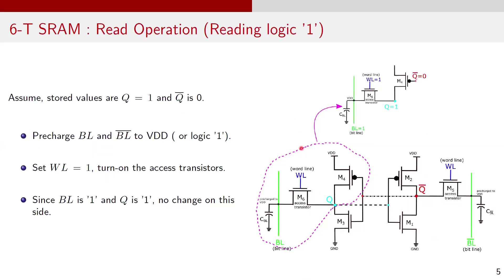To understand the read operation in SRAM cell, let's assume the stored values are Q equals to 1 and Q bar equals to 0. To begin reading, both bitlines BL and BL bar are pre-charged to VDD or logic 1. Then the wordline WL is activated by setting it to 1. When the wordlines are activated, the access transistors turn on connecting the bitlines to the storage nodes.